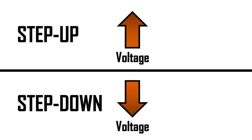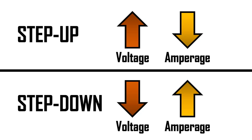That's not too complicated, but there is another variable affected when the voltage is transformed. When a step-up transformer increases the voltage, the amperage of the circuit decreases, and when a step-down transformer decreases the voltage, the amperage is increased.